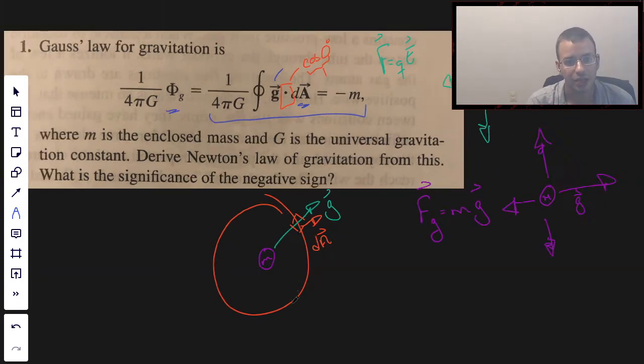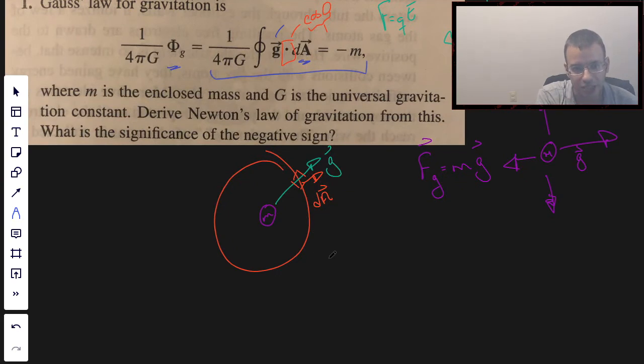So I can rewrite this at this point as 1 over 4πG, G is the gravitational constant, g dA. So I got rid of the dot product and I got rid of the vectors, basically because the two are parallel. And a dot product is always going to give you a scalar afterwards.